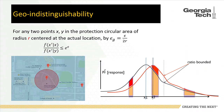Another privacy notion is geo-indistinguishability, derived from differential privacy. It does not make any assumption about the adversary's prior knowledge. Basically, within a circular area, any two points within that area have a similar probability of being transformed to the same fake location.